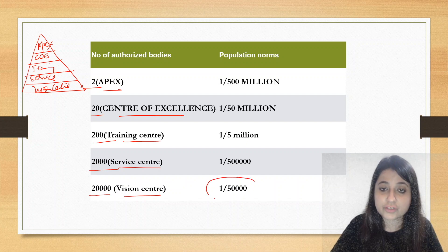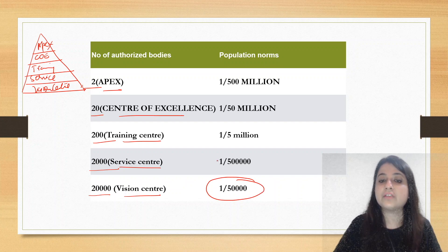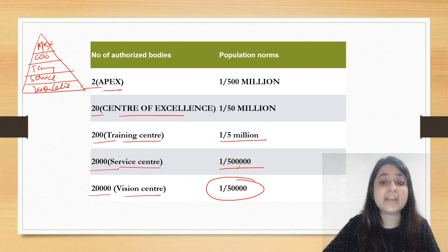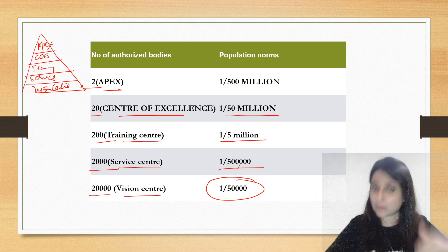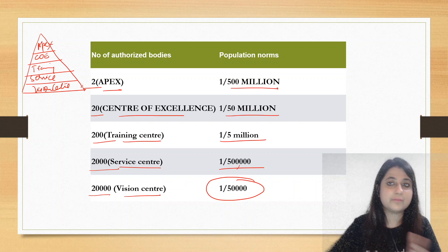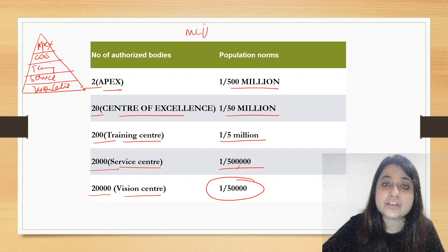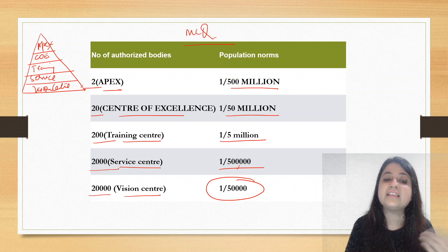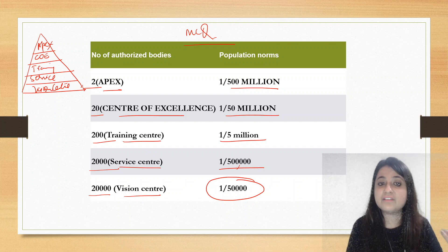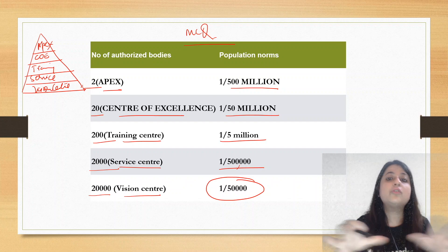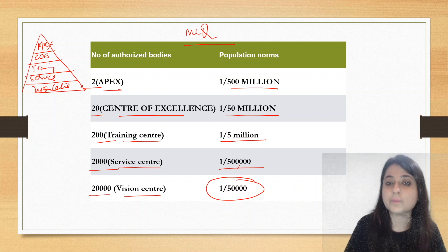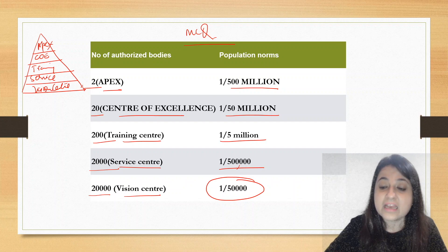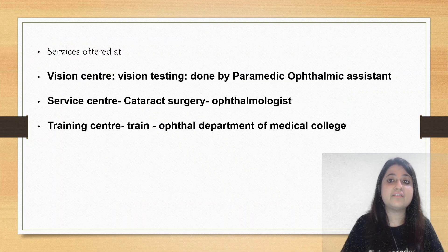Vision Centers are at the primary level — at least 1 per 50,000 population. Service Centers: 1 per 5 lakh (500,000) population. Training Centers: 1 per 5 million population. Centers of Excellence: 1 per 50 million population. Apex Institutes: 1 per 500 million population. You must know how many of each center there are and what population norms they cover — this is very important.